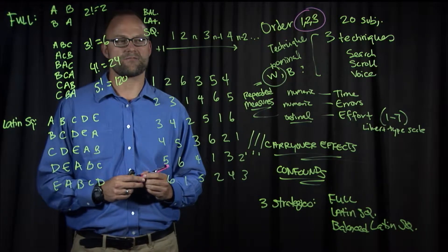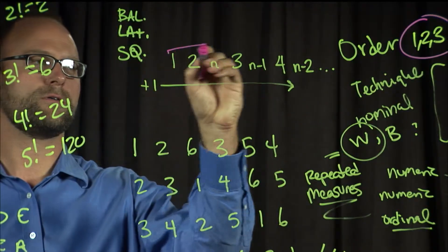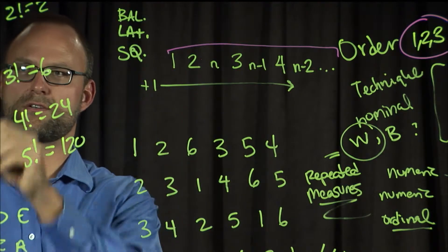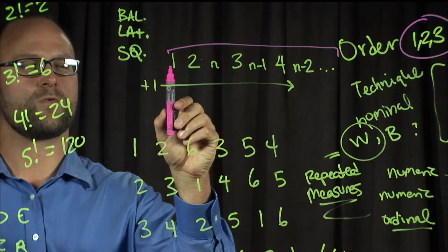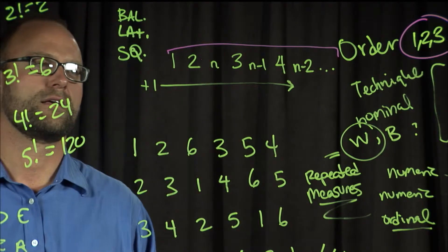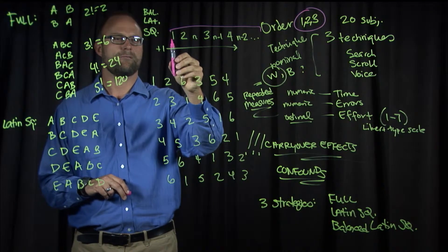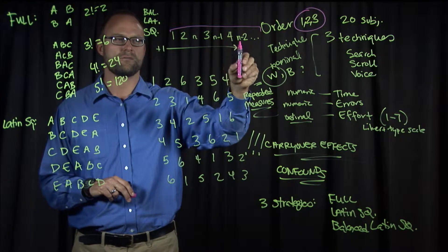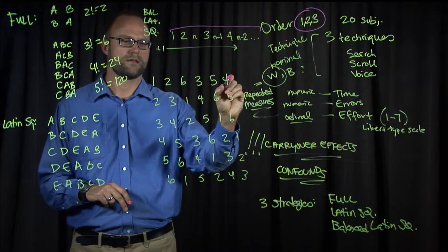Let's first assume we have an even number of conditions. Let's say we'll do an example with six, but let me point out how this is structured. The way it works is the top row starts with a formula. Instead of using letters like we did before, we're using numbers to make it easier to see how this works. You have condition one, then two, then n. So if you have a six-level factor, it'd be six. Then three, then n minus one, four, n minus two, and so on. You kind of see one, two, and then you're counting up, three, four, eventually five, and so on. And then you're counting down, n, n minus one, n minus two, and every other.